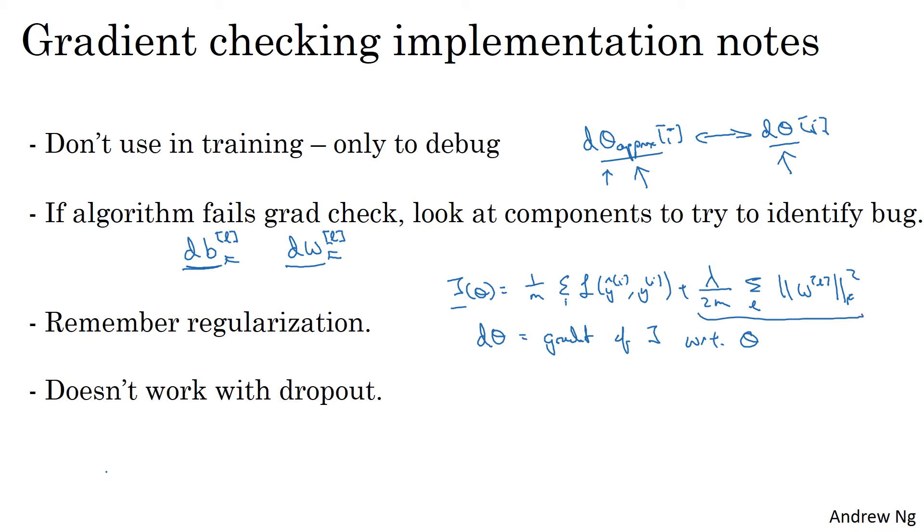Next, grad check doesn't work with dropout. Because in every iteration, dropout is randomly eliminating different subsets of the hidden units. There isn't an easy to compute cost function J that dropout is doing gradient descent on. It turns out that dropout can be viewed as optimizing some cost function J, but it's a cost function J defined by summing over all exponentially large subsets of nodes they could eliminate in any iteration. So the cost function J is very difficult to compute, and you're just sampling the cost function every time you eliminate different random subsets of nodes when you use dropout.